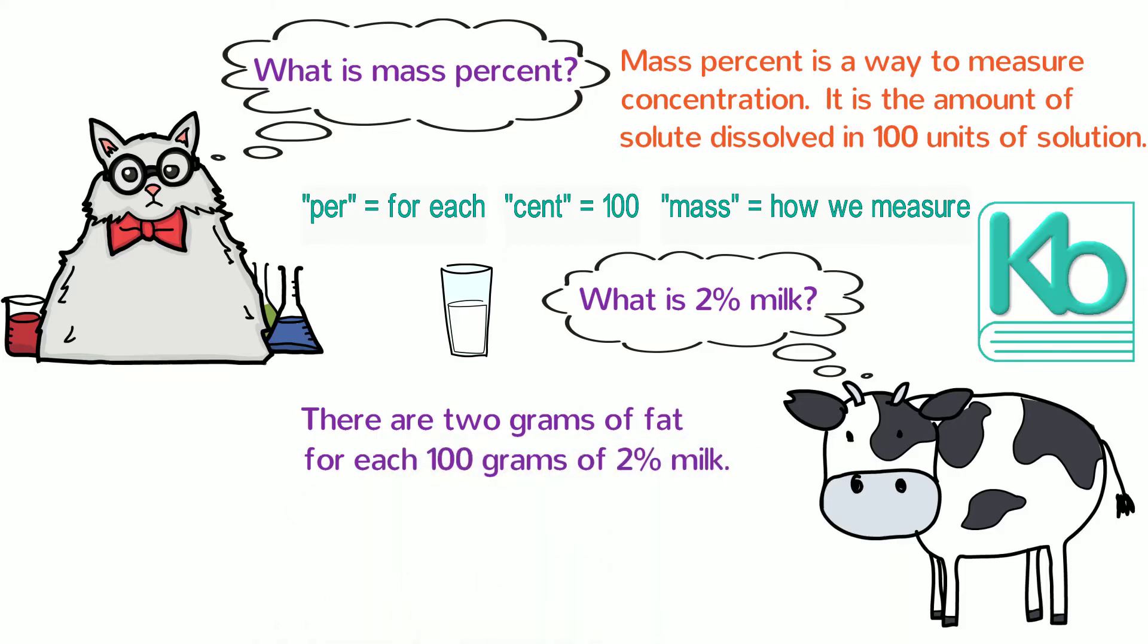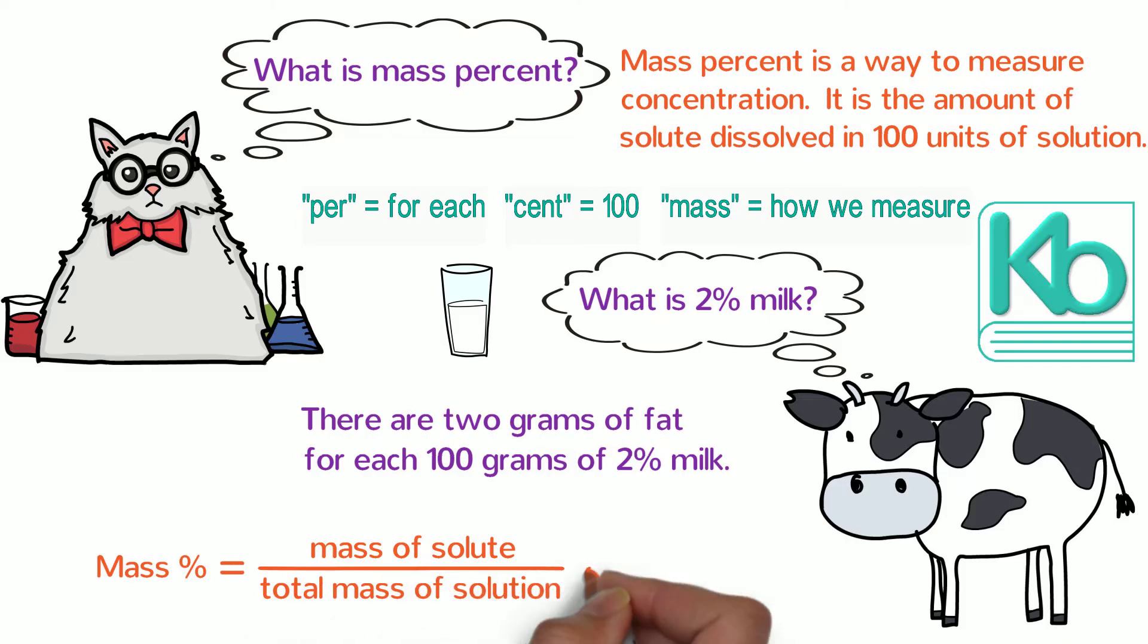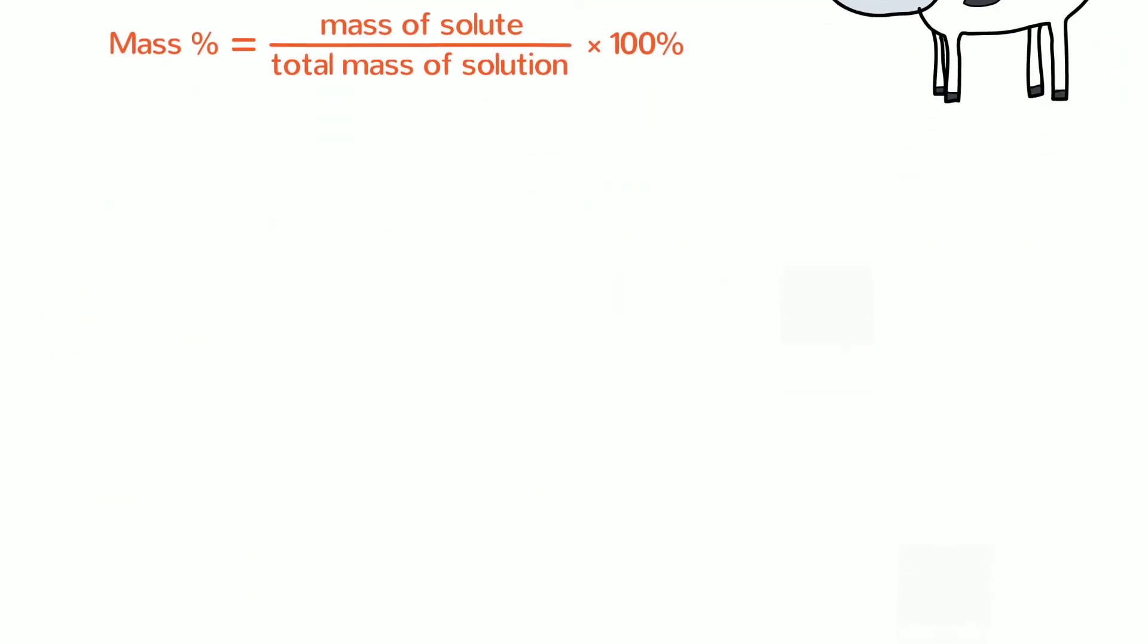The equation that we will use to calculate mass percent is mass percent equals the mass of the solute divided by the total mass of the solution all multiplied by 100 to turn the fraction into a percent. Let's try some examples to see how this works.